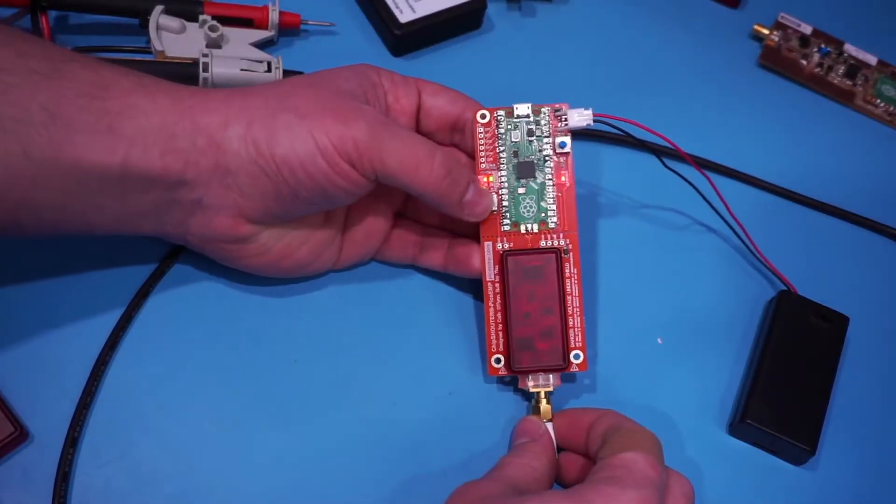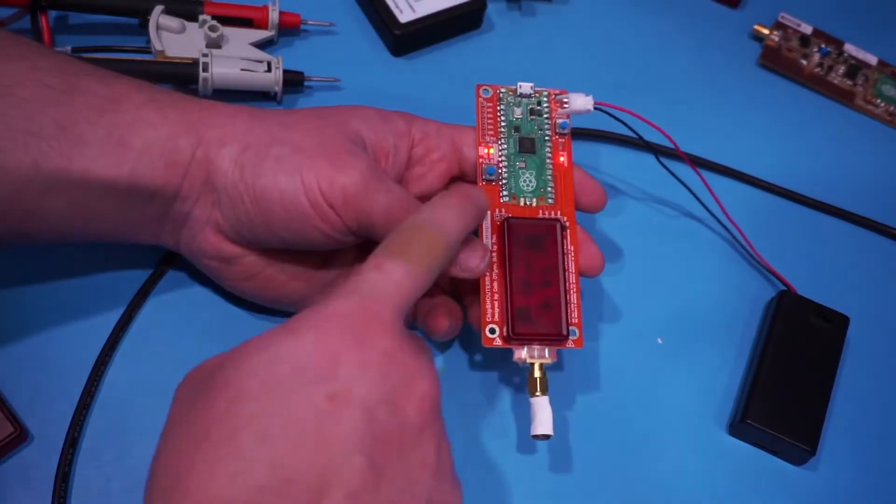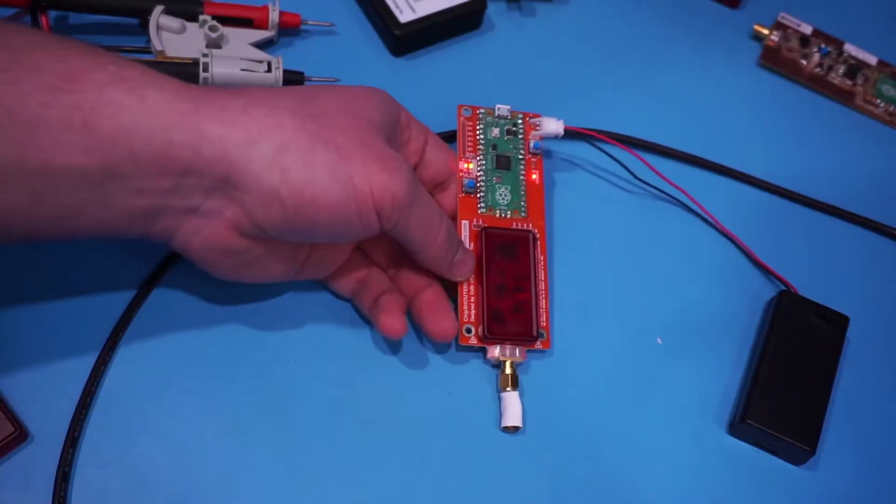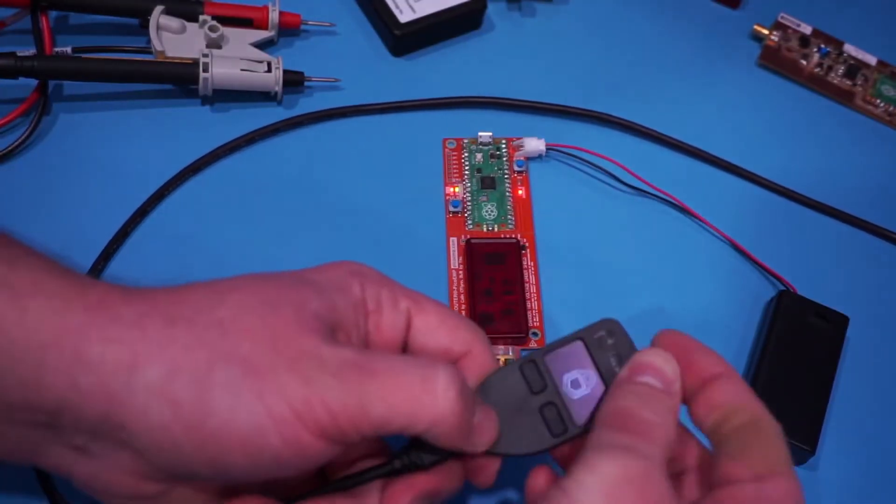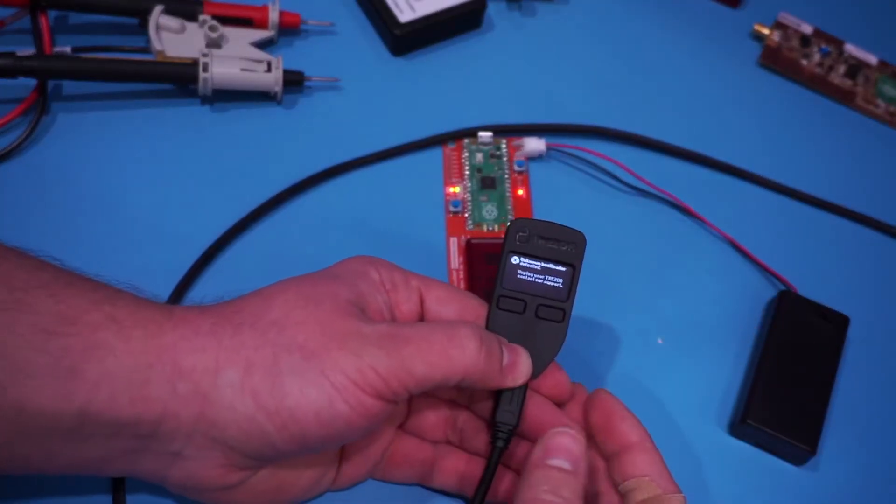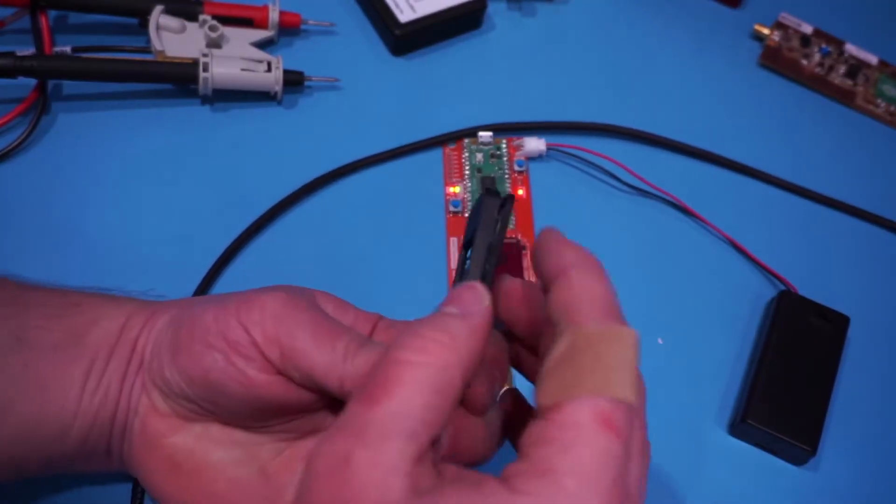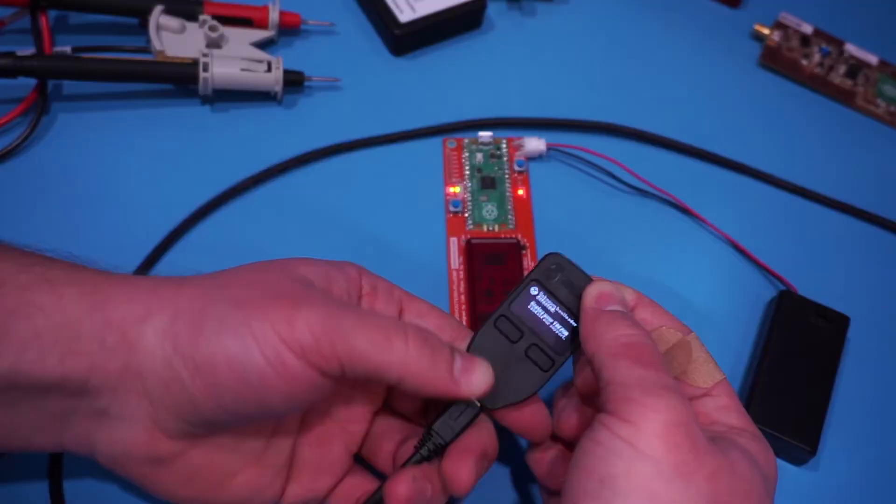So I created something called Pico EMP, which is an electromagnetic fault injection tool. You can see this nice safety shield over the high voltage side, and it basically allows you to relatively safely insert high electromagnetic pulses into a device.